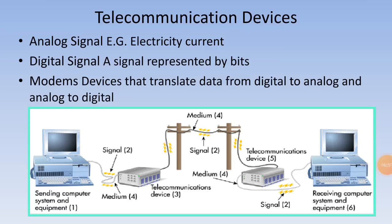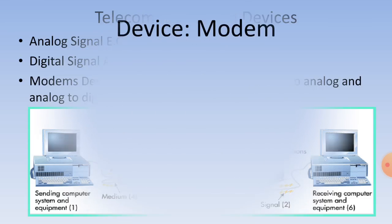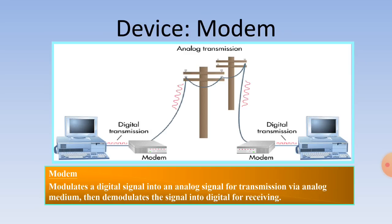Telecommunication devices: An analog signal is represented by electricity current, while a digital signal is represented by bits. Modems are devices that translate data from digital to analog and from analog to digital. A modem modulates a digital signal into an analog signal for transmission via an analog medium, then demodulates the signal back into digital upon receiving.